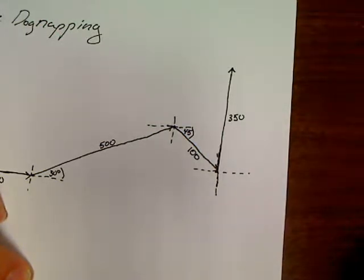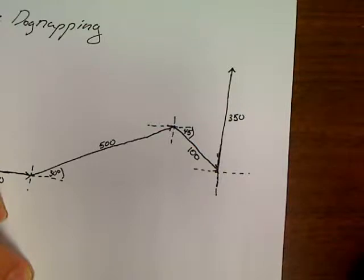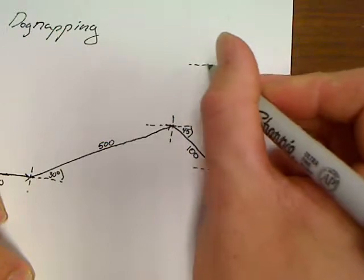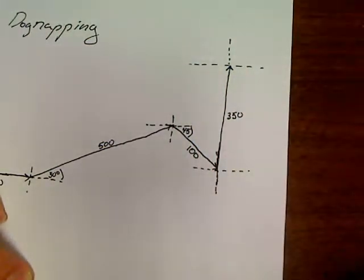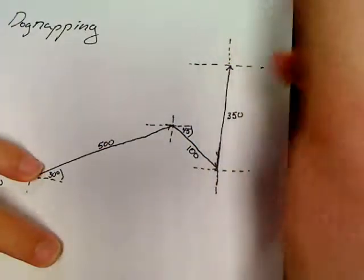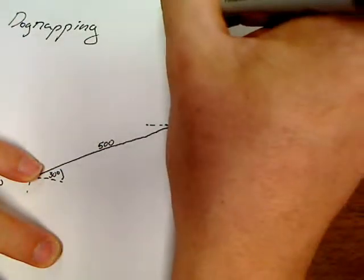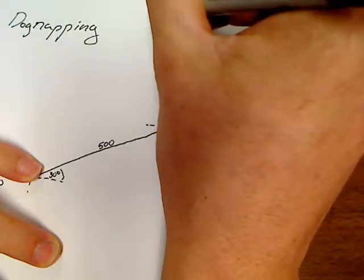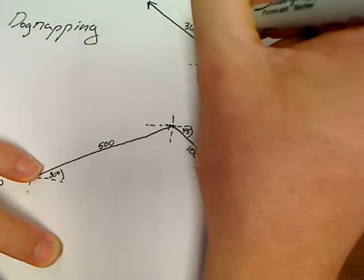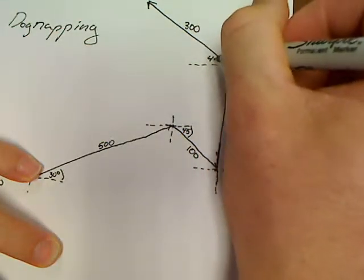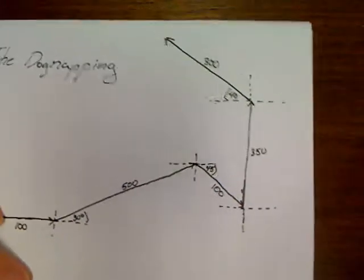After going 350, let's see, some funny stuff. Turning 40 degrees north of west and going 300. So he gets to here and turns to 40 degrees north of west and goes for 300. So 300 at 40 degrees north of west.